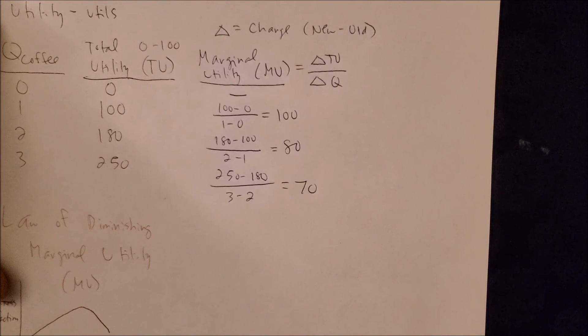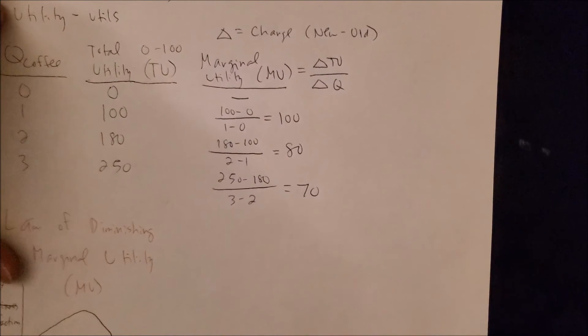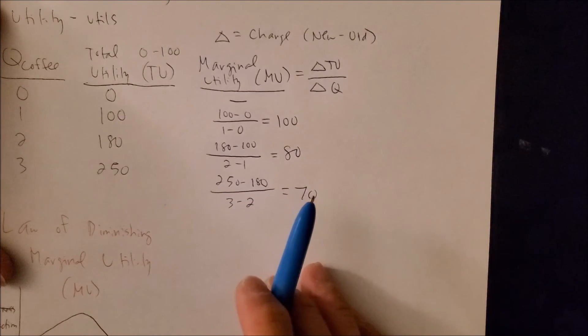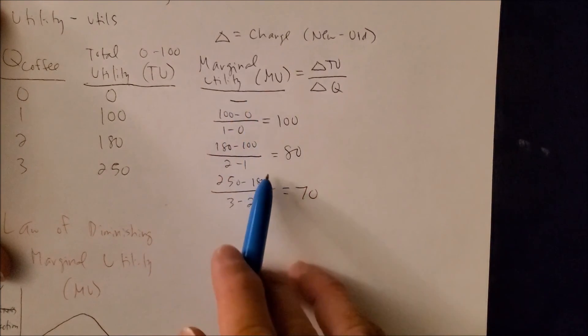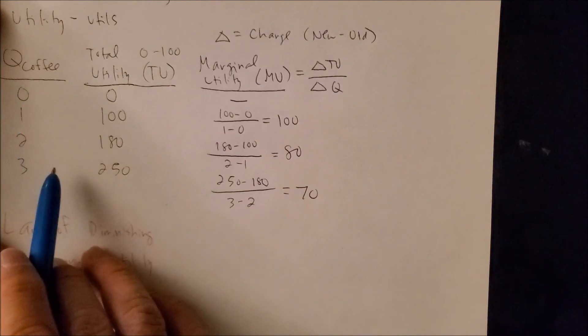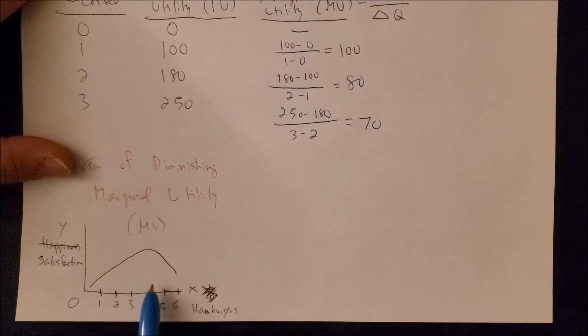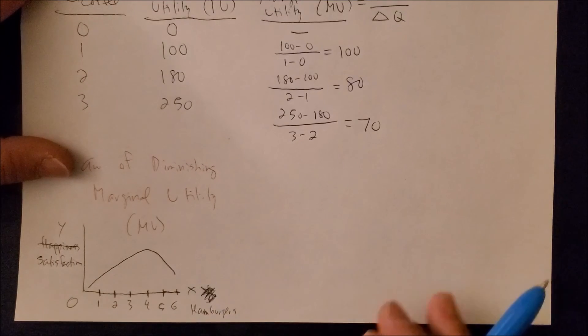So once we know the MU, this is kind of vital because now we can actually plot MU on the y-axis, quantity on the x-axis, and see something similar to the graph as such. And this is key because again this can give us information about your satisfaction level as a consumer.